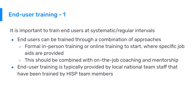It is important to train end users at systemic or regular intervals, because the system is continuously evolving, including the implementation of new features, forms, indicators, and different reporting frameworks. End users can be trained through a combination of approaches that include formal in-person or online training to start, where specific job aids can be provided, combined with on-the-job coaching and mentorship after training to ensure concepts are implemented in practice. End user training is typically provided by local national team staff trained by the HISP team through this training of trainers approach.